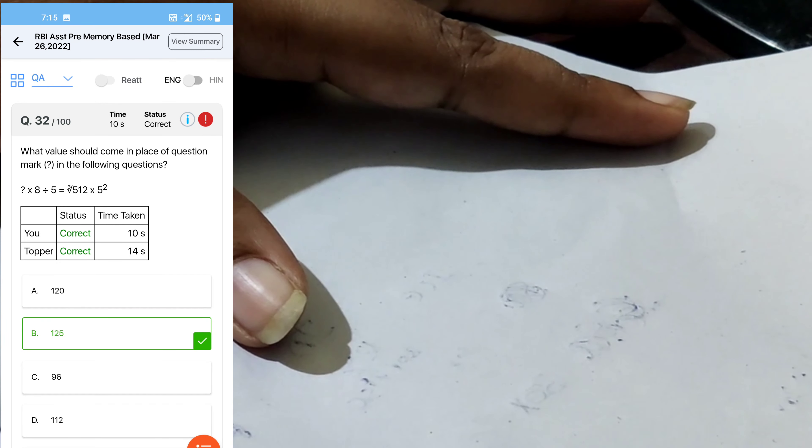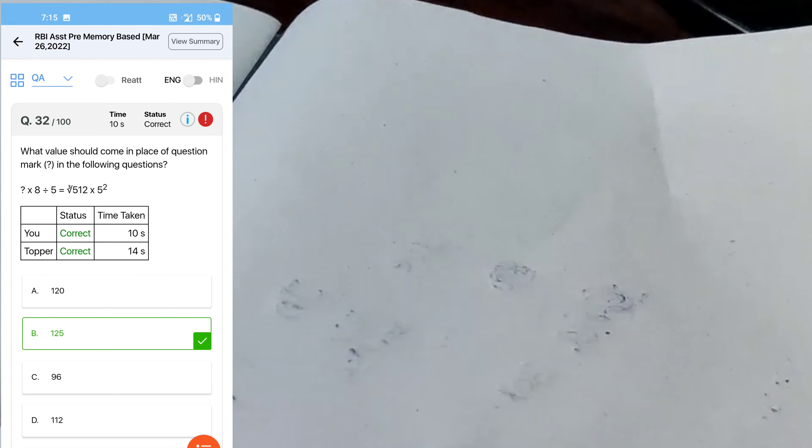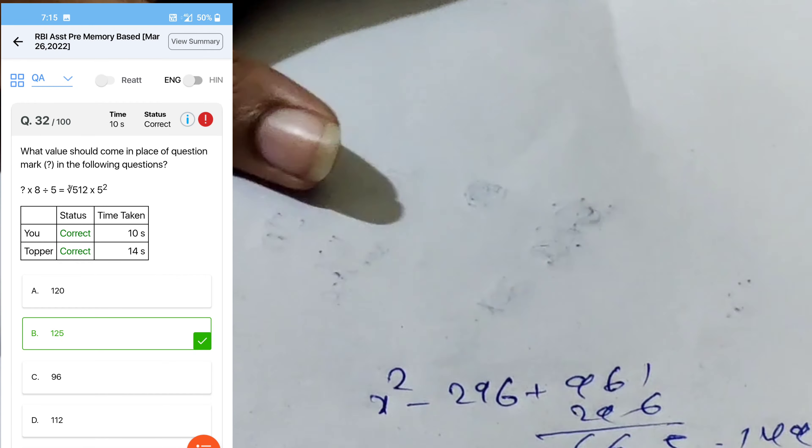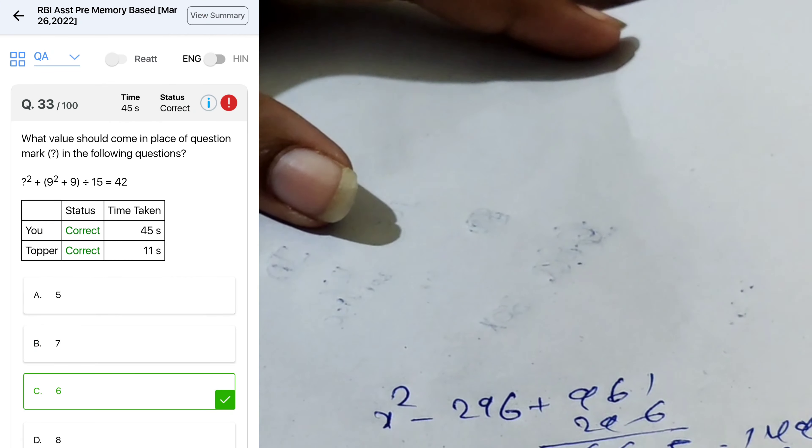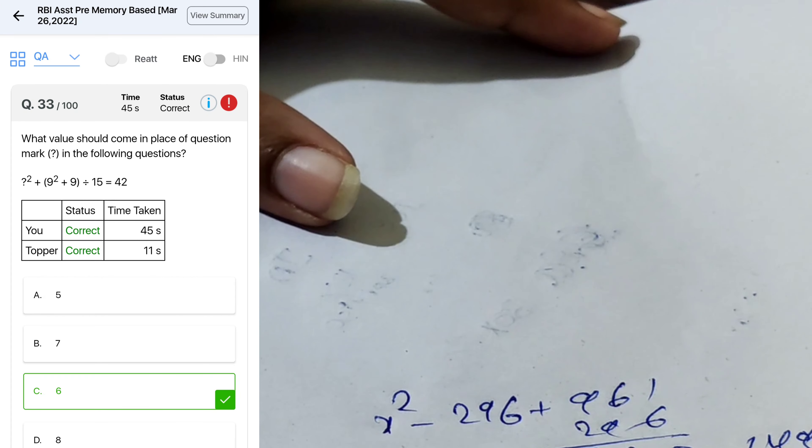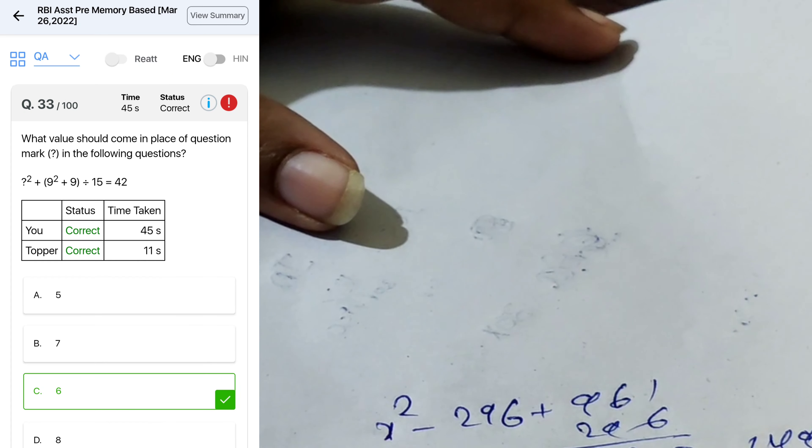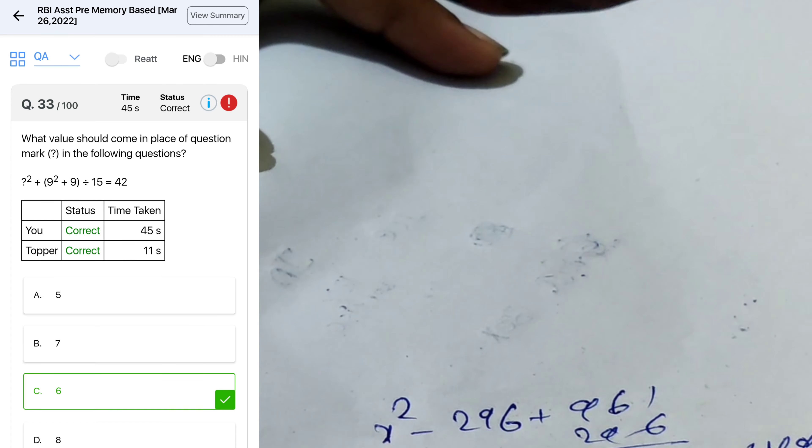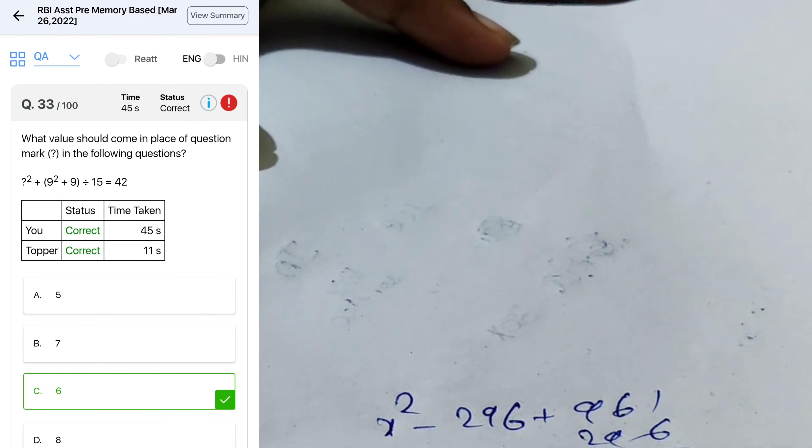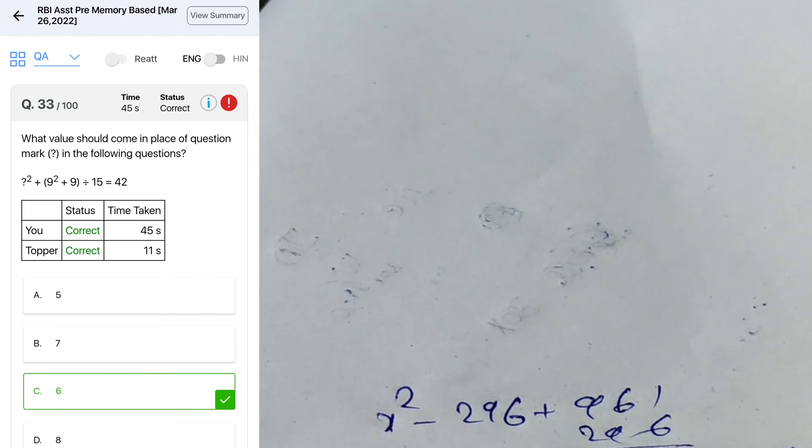Next equation x squared plus 9 squared, 81, 990 divided by 15 is equal to 42, 53 is equal to 53 is equal to 18. So next, so 36 here 7.